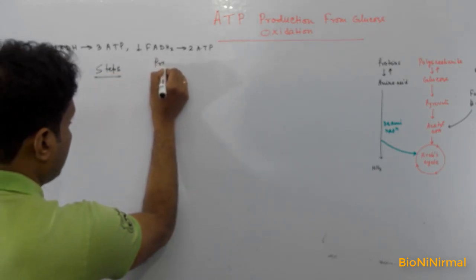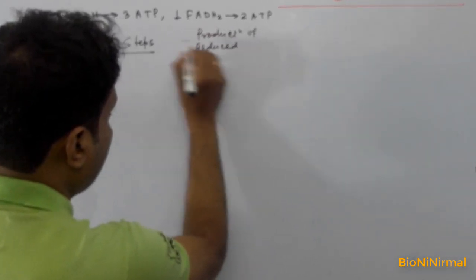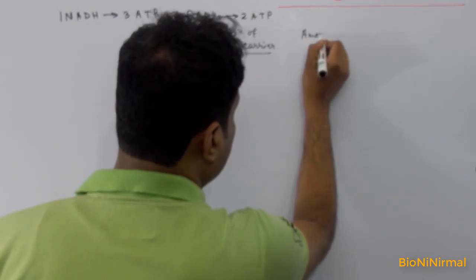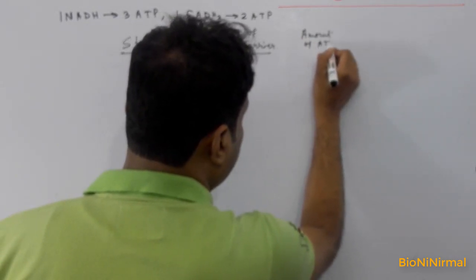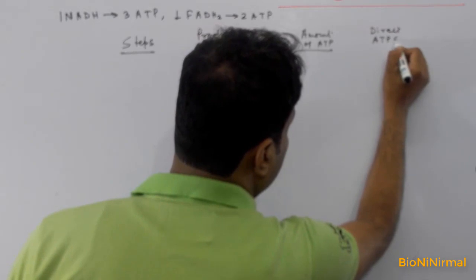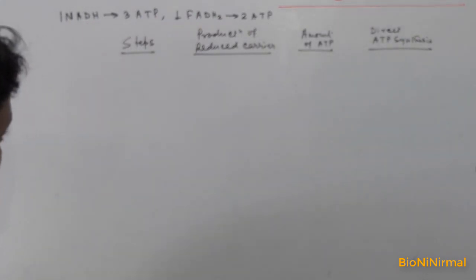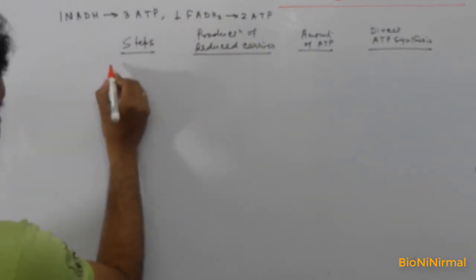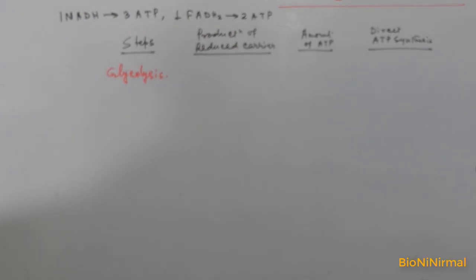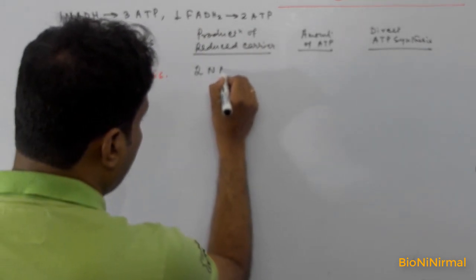Now for the ATP calculation, we look at the steps, the production of reduced carriers (NADH and FADH2), the amount of ATP, and the direct ATP synthesis, also called substrate level phosphorylation. First, glycolysis transforms glucose into pyruvic acid and produces two molecules of the reduced carrier — two NADH molecules.